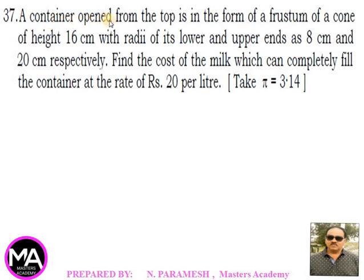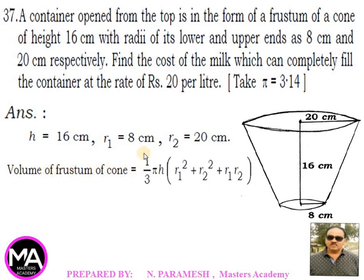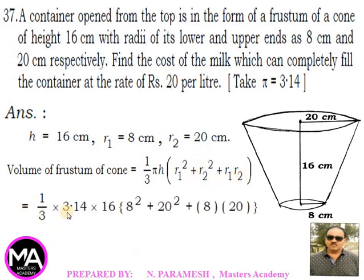37th question: A container opened from the top is in the form of a frustum of a cone of height 16 cm, with radii of lower and upper ends as 8 cm and 20 cm respectively. Find the cost of milk to completely fill the container at rupees 20 per liter (π = 3.14). Volume of frustum = (1/3)πh(r1² + r2² + r1·r2). Substituting: (1/3)(3.14)(16)(8² + 20² + 8×20).